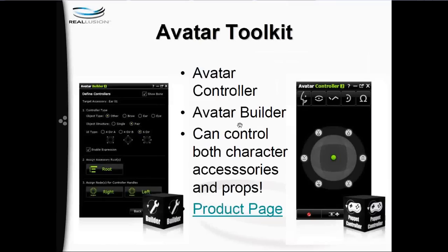The next product is the Avatar Toolkit. The Avatar Toolkit is basically what you need to create your own accessories. You don't need the Avatar Toolkit just to control or use these characters — the Avatar Controller comes default with any ToonMaker pack. However, if you want to build your own customizable accessories, you'll want to purchase the Avatar Toolkit, which gives you a lot of freedom to do that kind of stuff on your own.